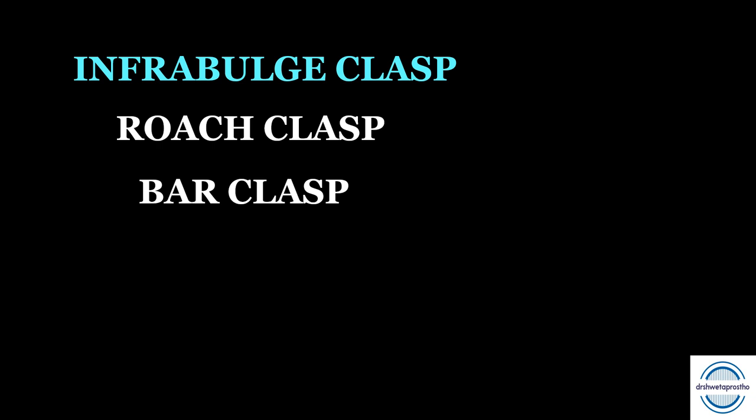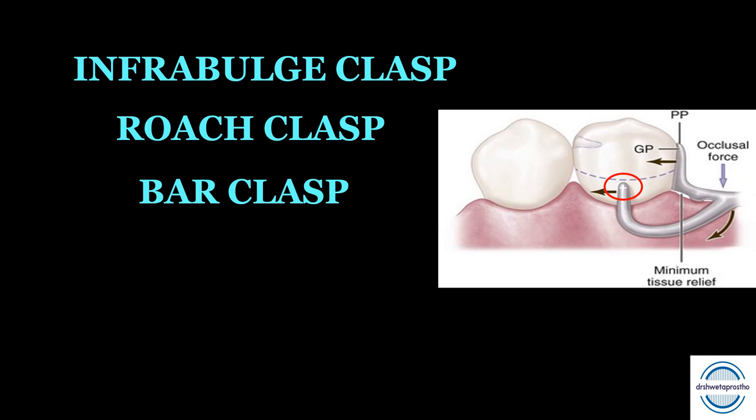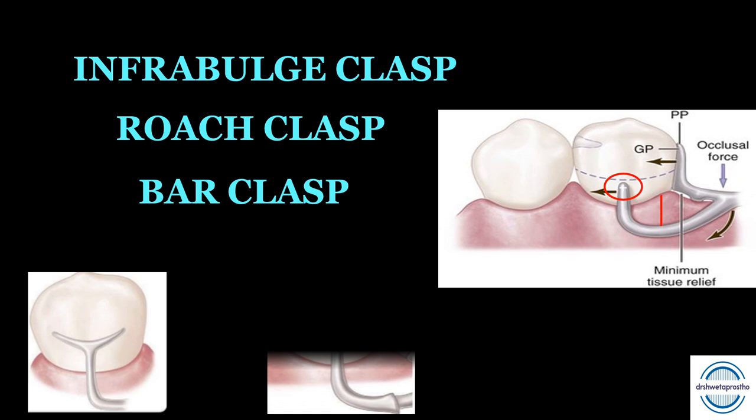Infrabulge clasp originates from the infrabulge area (apical direction). Also called the Roach clasp — popularized by Ewing Roach in 1930 — and the bar clasp. It has a retentive tip lying below the height of contour to provide retention. The approach arm is a flexible minor connector requiring a minimum clearance of 4 mm from the free gingiva. Because of its design, it is more aesthetic than the circumferential clasp. Depending on the shape of the retentive tip, it can be a Y-clasp, T-clasp, or I-clasp.